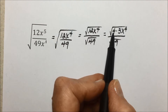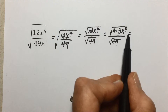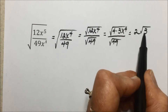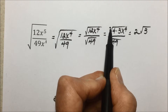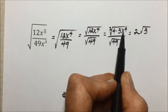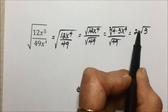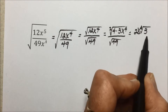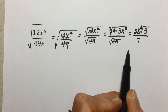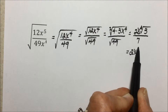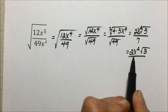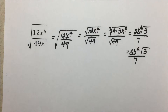Simplifying now: the square root of 4 is 2. We can't simplify the square root of 3 further, and with index 2, x to the 4th divided by 2 leaves us with x to the 2nd power, over the square root of 49, which is 7. So our final answer is 2x² times the square root of 3, over 7.